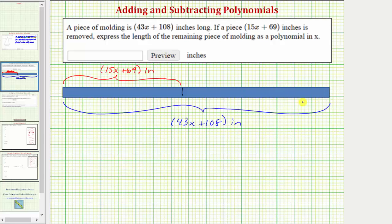So if we have this long piece of molding and we remove this piece, we're left with the piece on the right. And our goal here is to find the length of this remaining piece, which we'll call L.